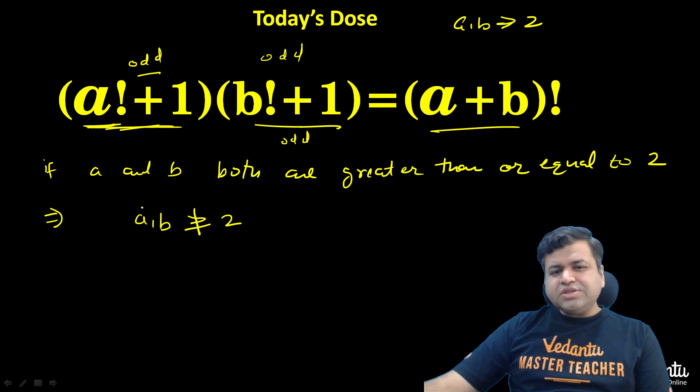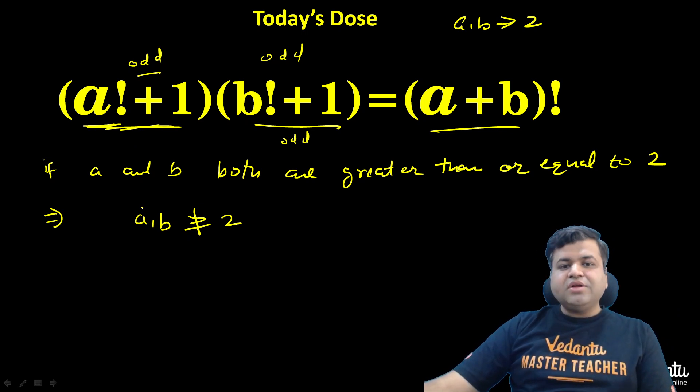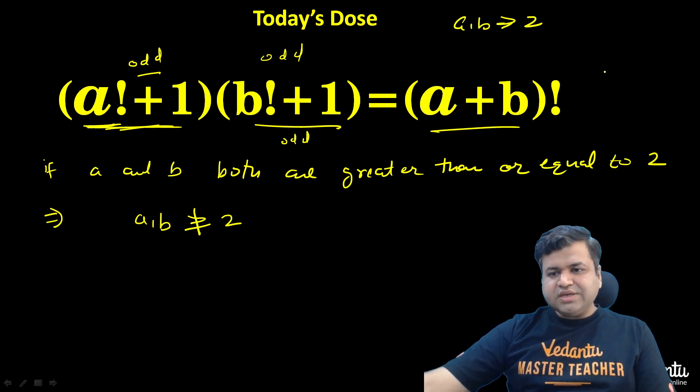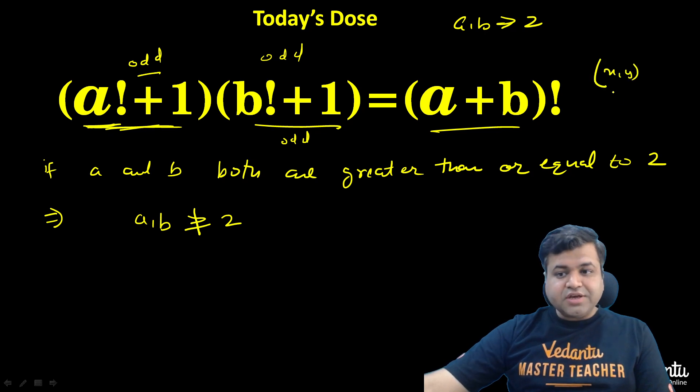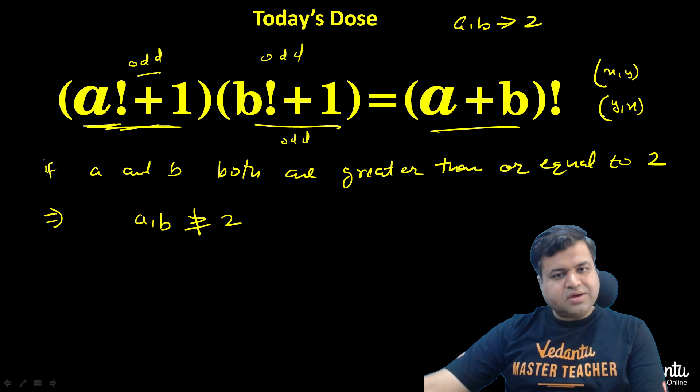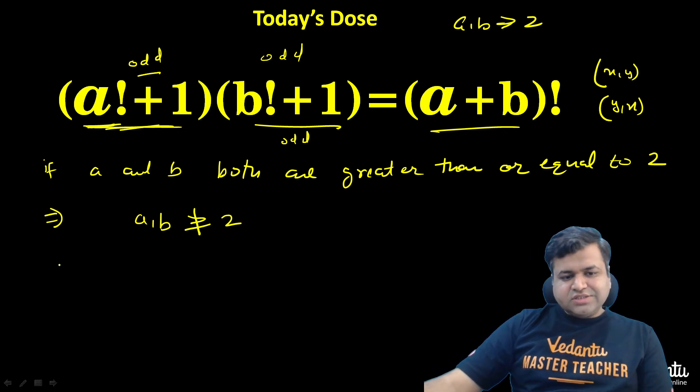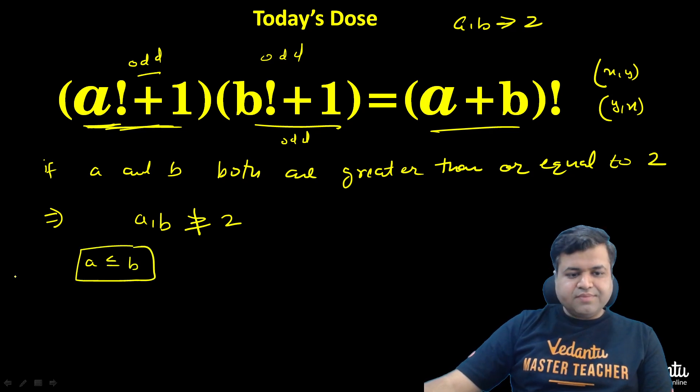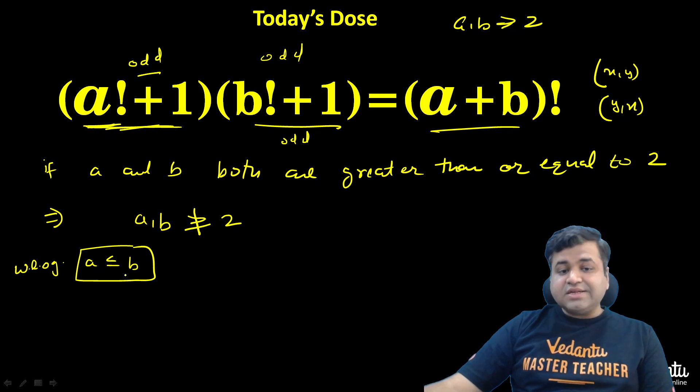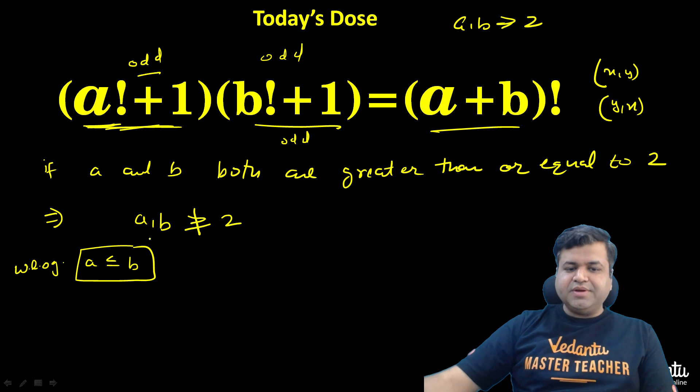Second thing: as you can see, a and b are both symmetrical. So if x, y will satisfy the equation, then obviously y, x will satisfy it too. If x and y are different. So now let's assume that a is less than or equal to b. Without loss of generality, we can assume this since the equation is entirely symmetrical in terms of a and b.